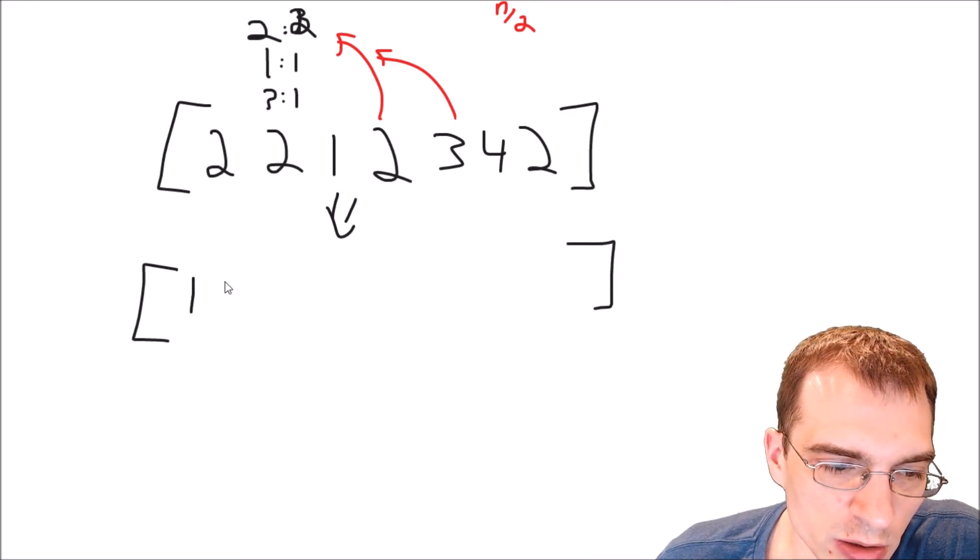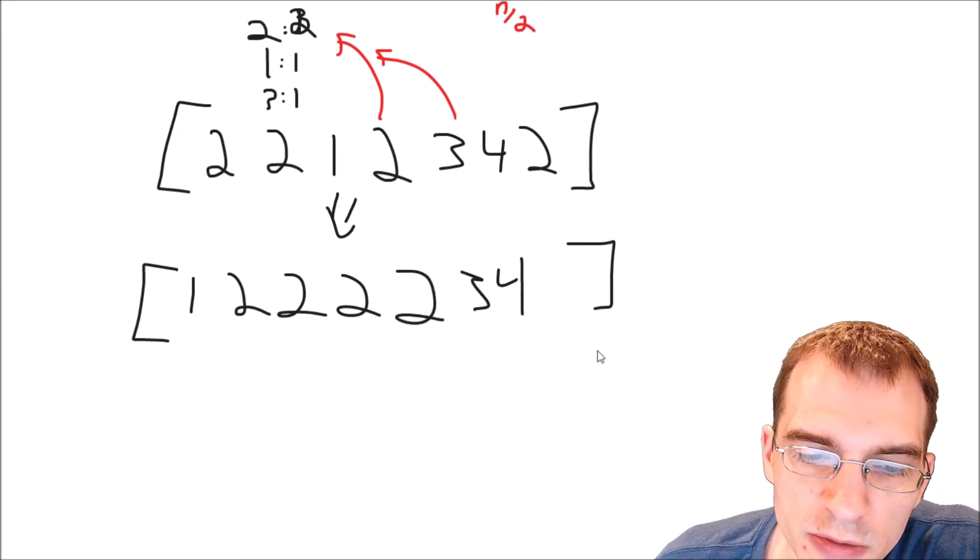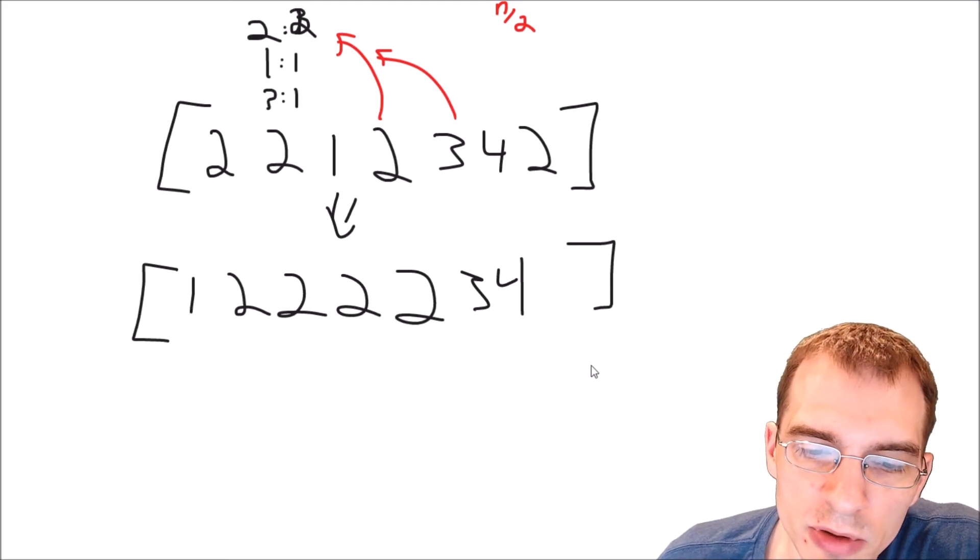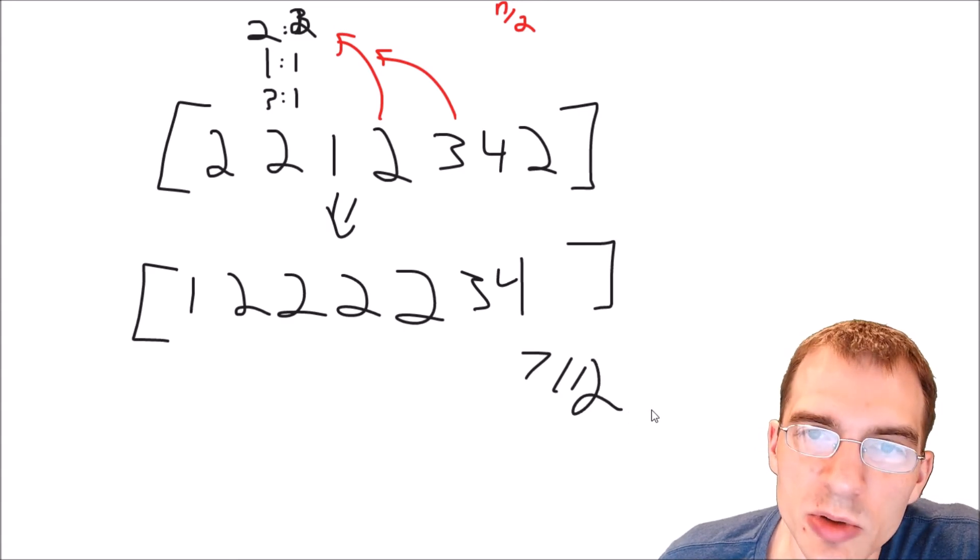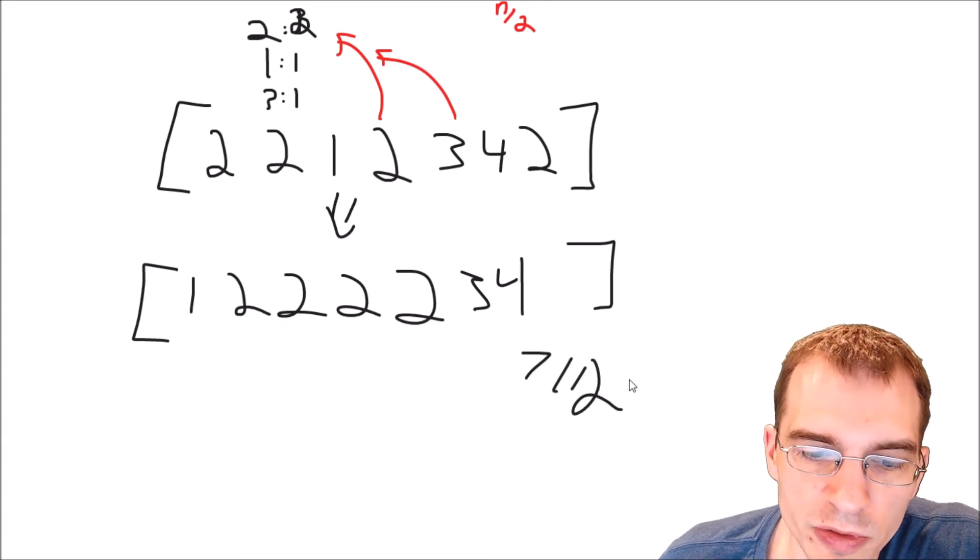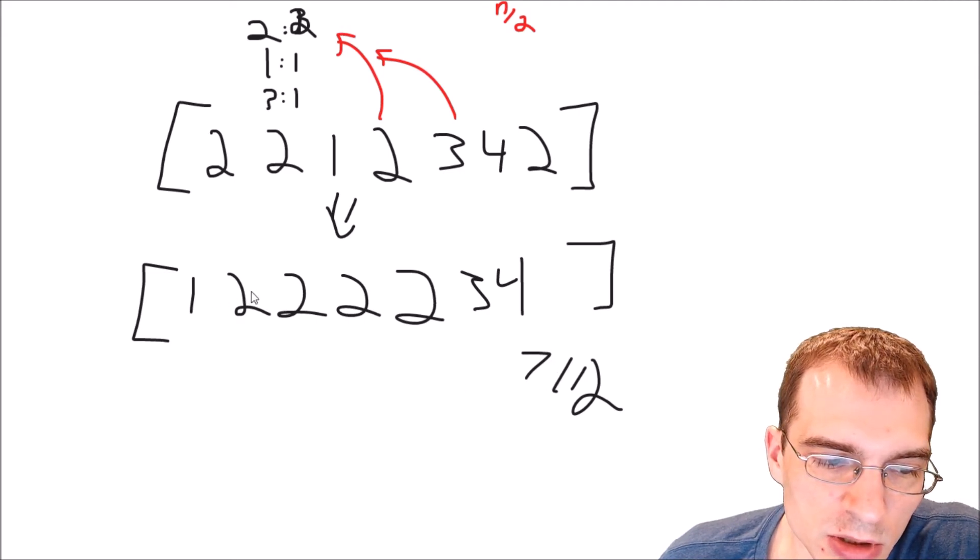we'd have 1, 2, 2, 2, 2, 2, 3, 4. And you'll notice that if you go to the middle of the array, so say the length of the array which is 7, and the middle would be the floor divide 2 of that. So we'd be at element 3: 0, 1, 2, 3.